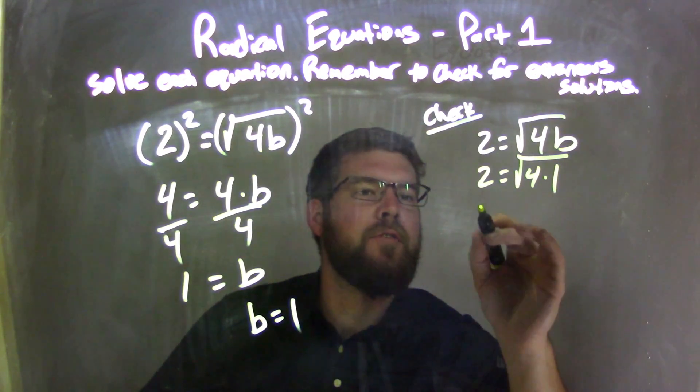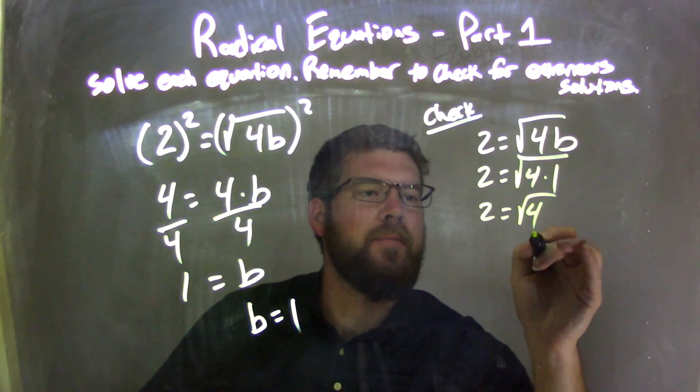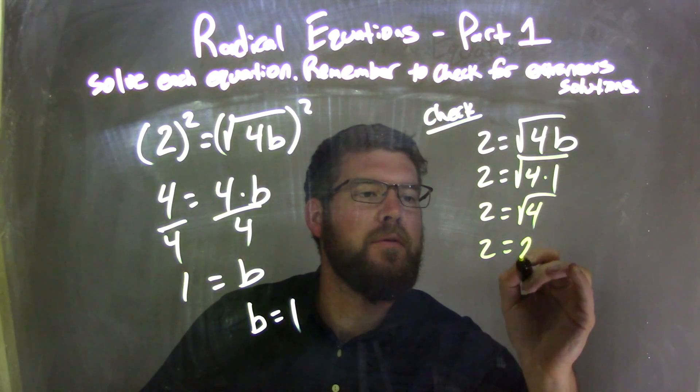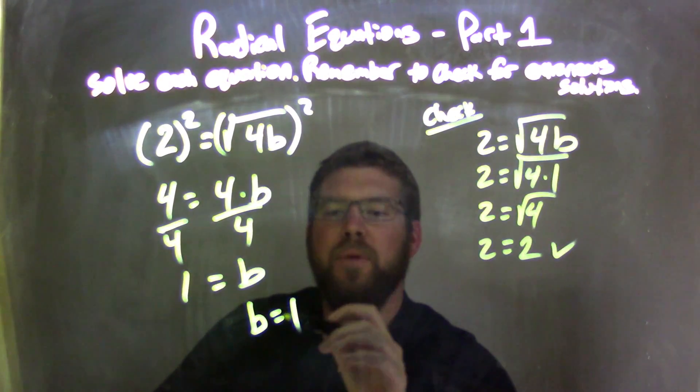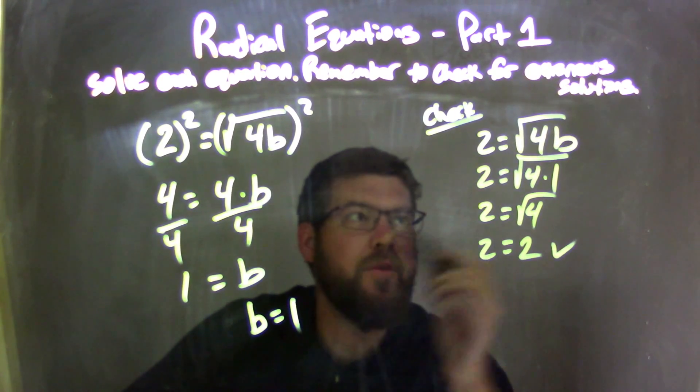Now we're going to simplify. 4 times 1 is just 4, the square root of 4 here. The square root of 4 is 2, and there we go. 2 equals 2. My left and right side are equal, so we're good. So b equals 1 is my real answer. There's no extraneous solution.